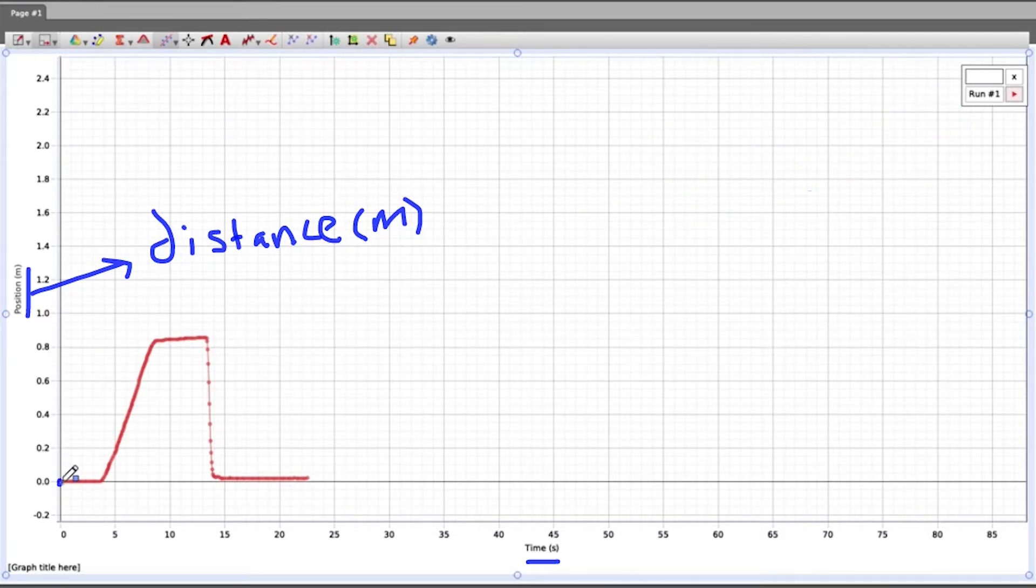In this case, when I first start the cart, you'll notice that the cart remains stationary and time goes by. About four seconds goes by and it does not move. It is stationary. So that's what this flat line means. It means that it's staying in the same place it started.